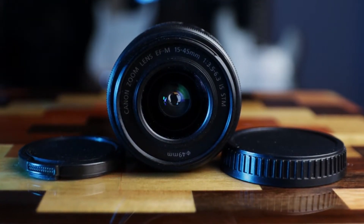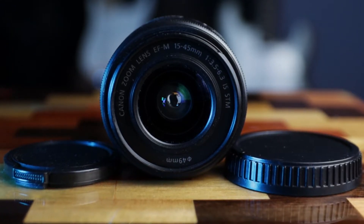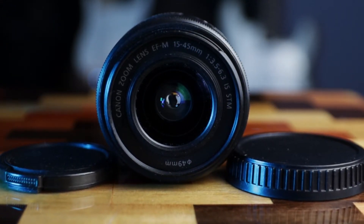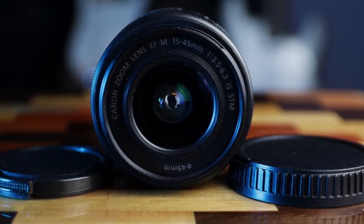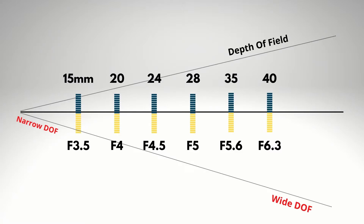On the front of the lens you're also going to see numbers that say 3.5 to 6.3. This is the aperture range that the kit lens has. At 15 millimeters, the kit lens's maximum aperture is 3.5. However, when you zoom out to 45 millimeters, your maximum aperture becomes 6.3.